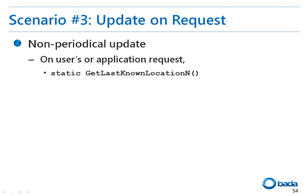This last scenario only updates the location when the application needs to be updated. As this method consumes much less battery power than the conventional periodic update of the location, this should be used when it is not necessary to update the location periodically. In this case, you can get the most recently updated location using the GetLastKnownLocationN function.